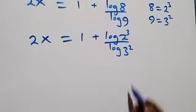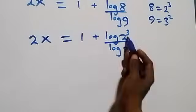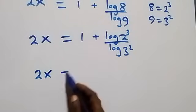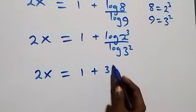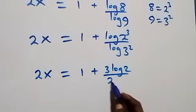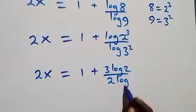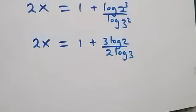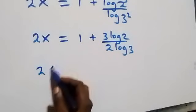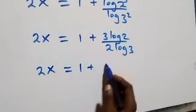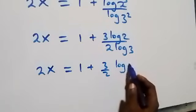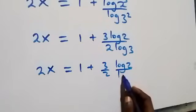Applying the power law of logarithms, the 3 comes down from the numerator and the 2 comes down from the denominator, giving us 2x equals 1 plus 3·log 2 over 2·log 3. We can write this as 2x equals 1 plus (3/2) times log 2 over log 3.